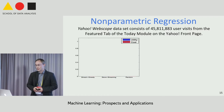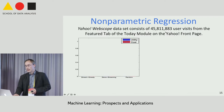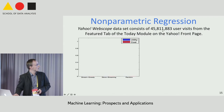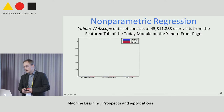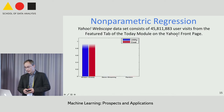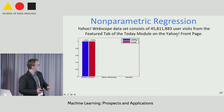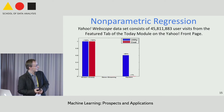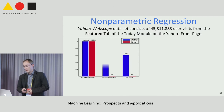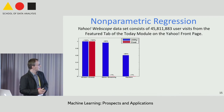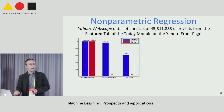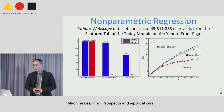The same holds for the nonparametric regression problem, evaluated on a click prediction task using a log of 45 million user visits from the Yahoo WebScope dataset. Stream-greedy is normalized to 100%. Random selection gives a small fraction of utility but is very fast. The sieve streaming algorithm captures almost all the utility at a very small fraction of the cost.